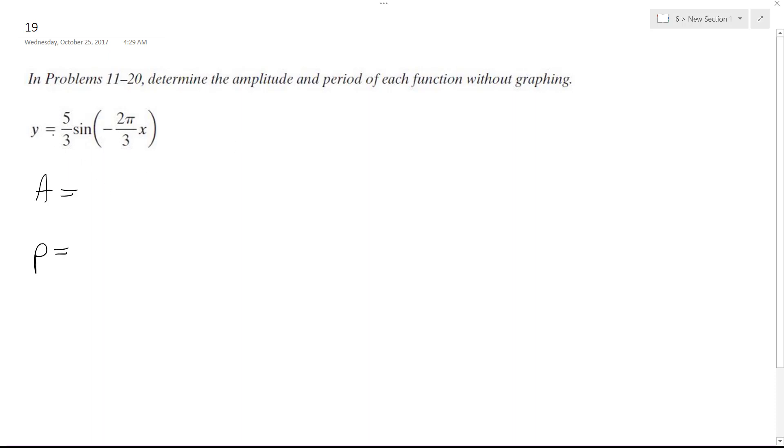The amplitude is simply the number in front of the trig function, the absolute magnitude of that. There's no negative so there's nothing to worry about. It's just 5 over 3.